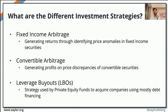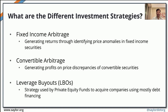Fixed income arbitrage is an investment strategy normally applied by private equity funds and other financial institutions. It involves generating returns by looking at price anomalies in a fixed income security. Another strategy is convertible arbitrage — also mostly applied by private equity funds and hedge funds — which involves generating profits on the price discrepancies of a particular convertible security.